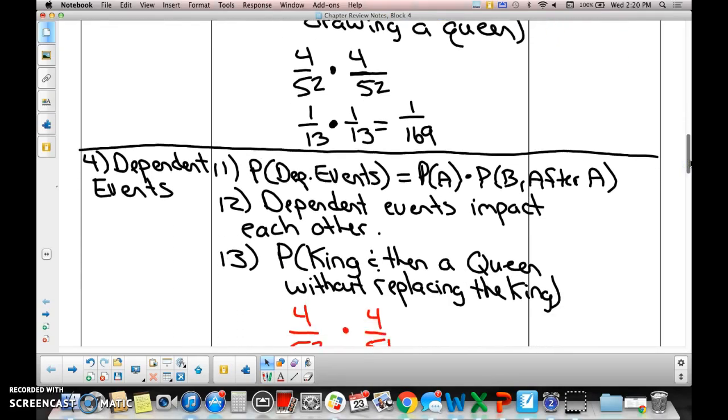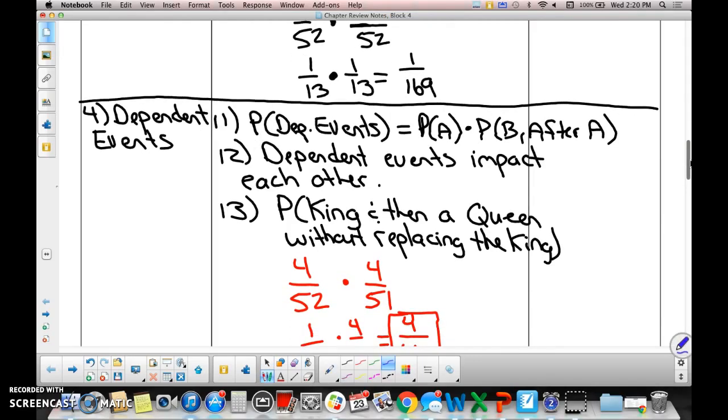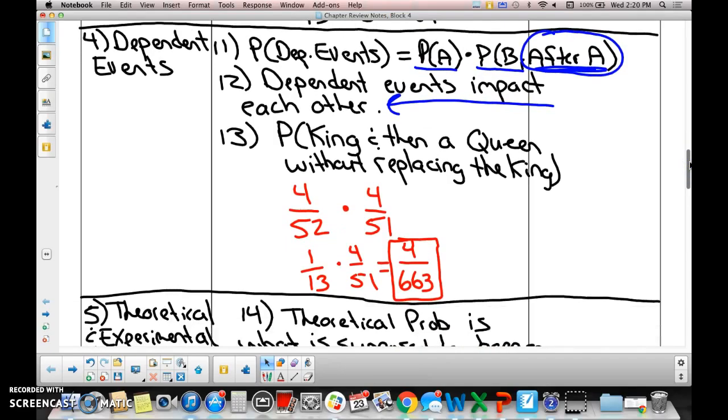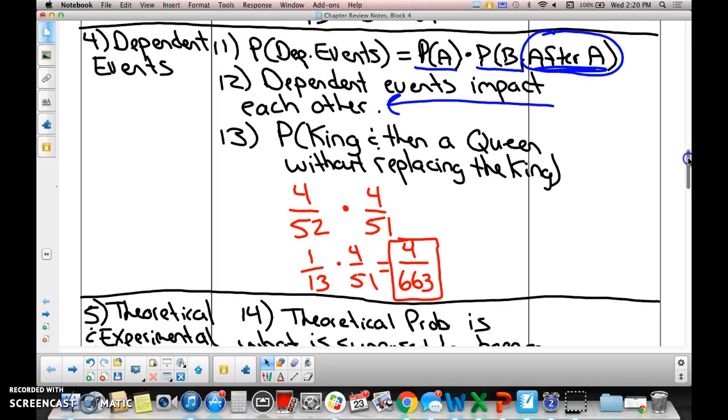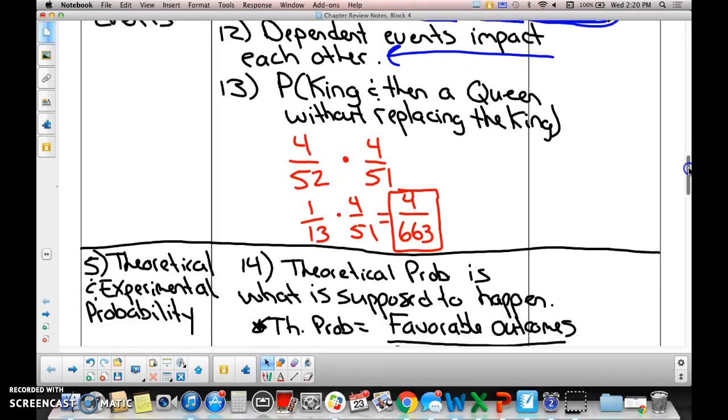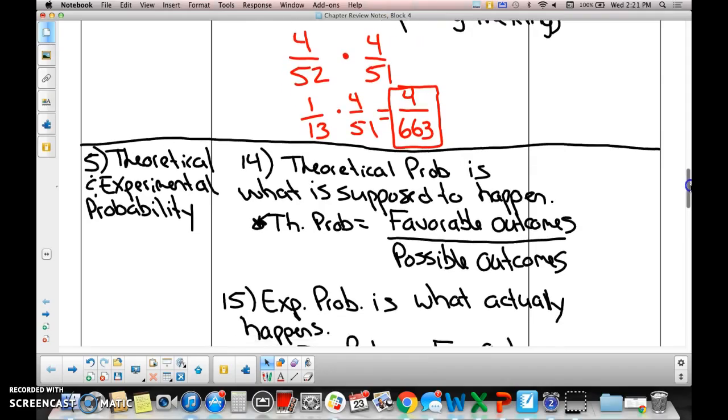Dependent events - the formula is pretty much the same as independent events. The probability of A times the probability of B. Here's where the difference comes in: with dependent events, one event has an impact on the other. Therefore, you have to take into consideration that event A happened. So if you draw a king and then a queen, but you don't replace the king, would that be independent or dependent? Dependent, because now the king is gone. Look at the example for 13 for more understanding.